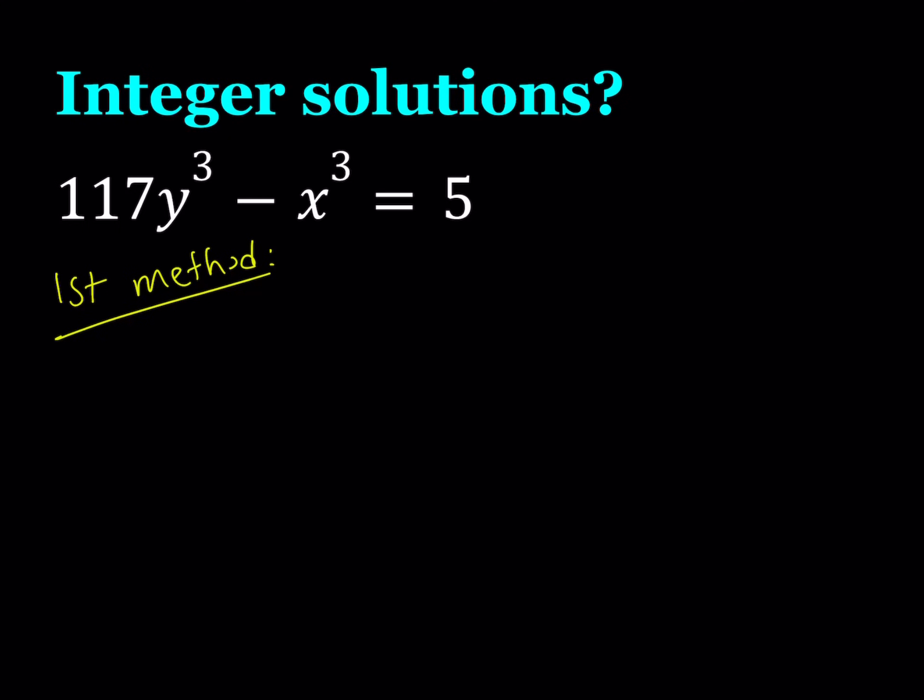So, if you look at this equation mod 3, first of all, notice that 117, because 1 plus 1 plus 7 is equal to 9, 117 is divisible by 3. So, mod 3, 117 is going to be 0, leaving us with negative x³, and that's going to be congruent to 2 mod 3, because 5 is congruent to 2 mod 3.